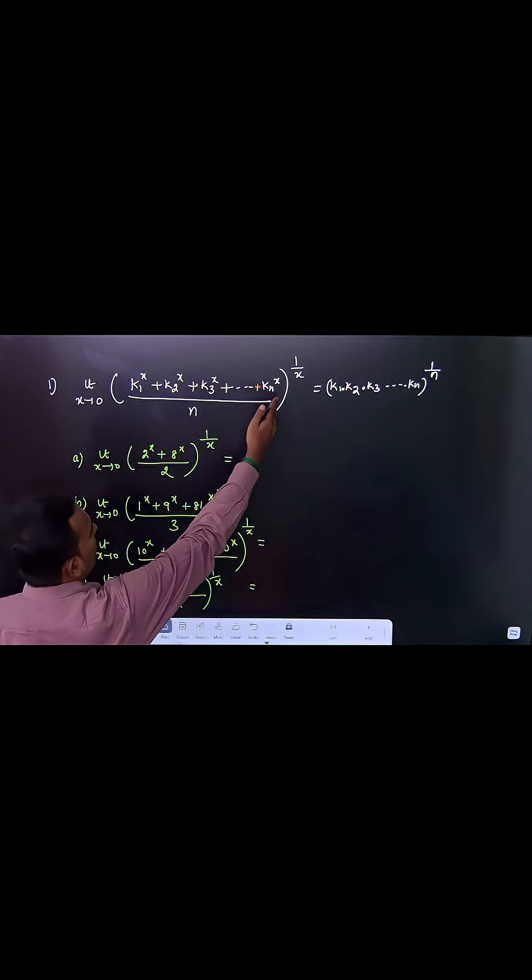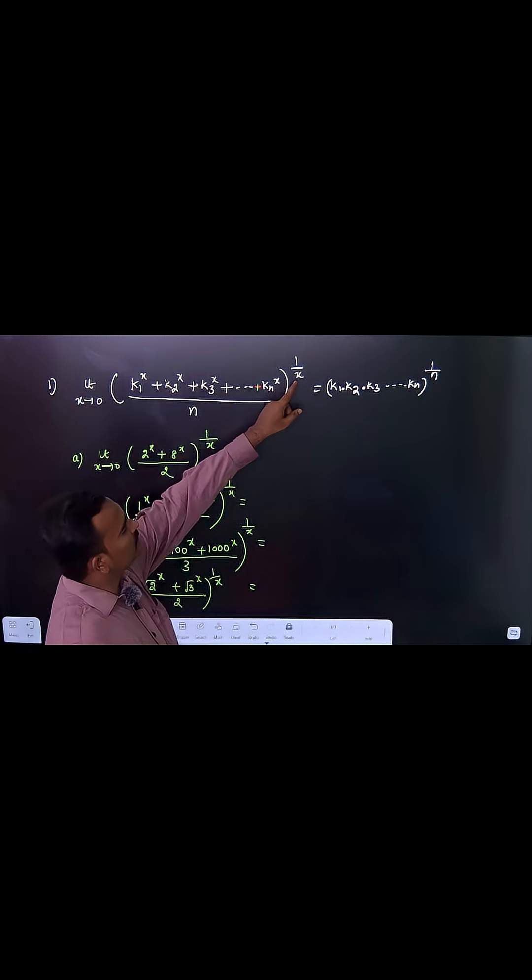The n terms are divided by n, and the whole expression is raised to the power 1/x. Whatever you are raising as the common term x here, you have to take it as the denominator of the power.